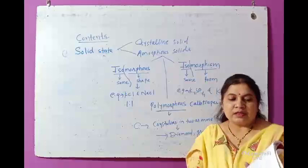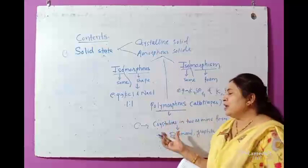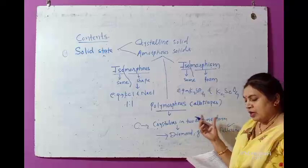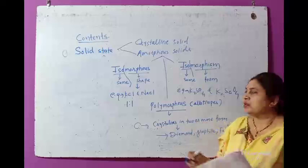These are the examples of polymorphism. Polymorphism is the phenomena in which a single substance crystallizes into two or more forms under different conditions on solidification. That phenomena is called polymorphism.